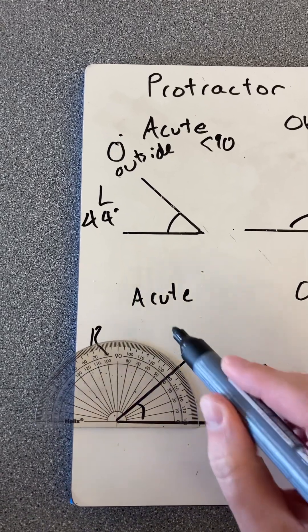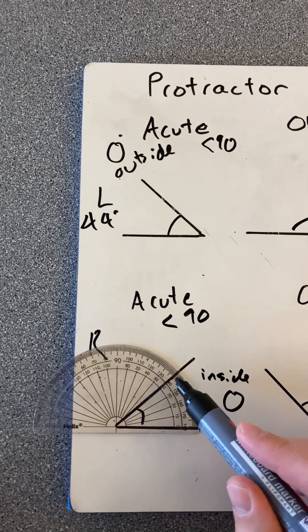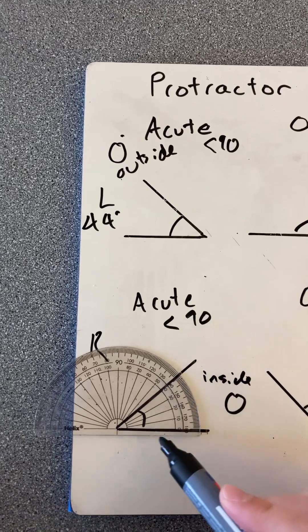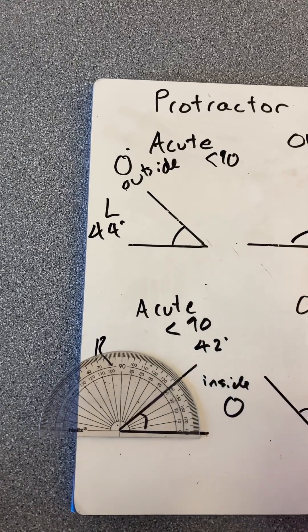And I'm going to read on the inside now. Again, always reading from zero. I know that it is less than 90, so I'm not going to say 130-something. I'm rather going to look up from zero and get to about 42 degrees.